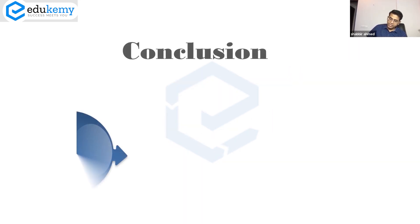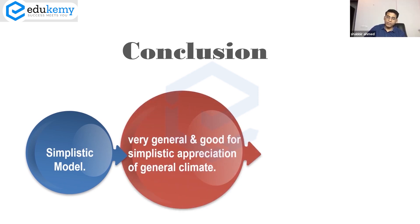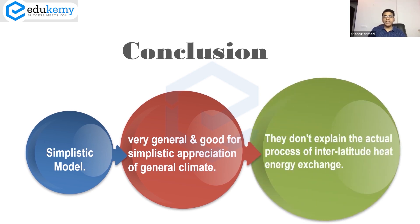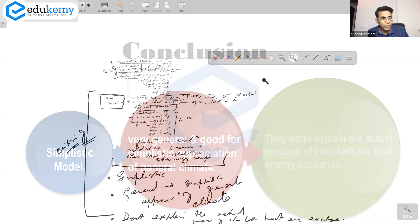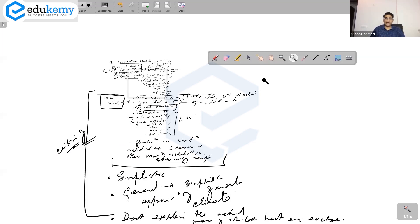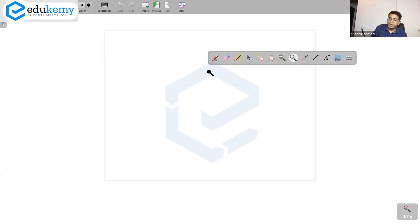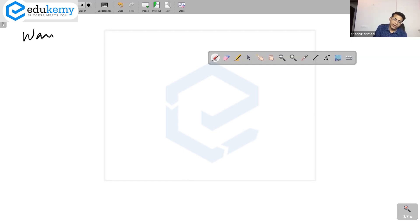They also ignore fluctuations in circulations related to seasons and other variations related to solar energy receipts. Our conclusion is these are simplistic. These models are very general and good for simplistic appreciation of general climate. They don't explain the actual process of inter-latitude heat energy exchange.